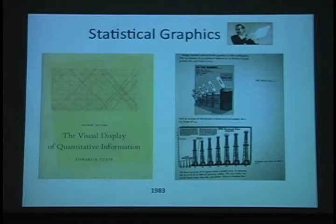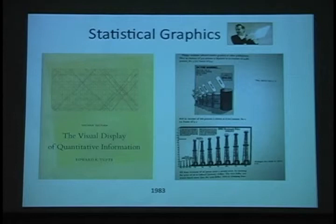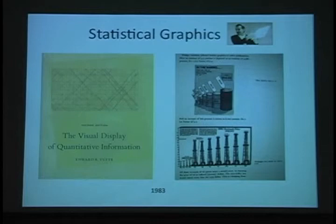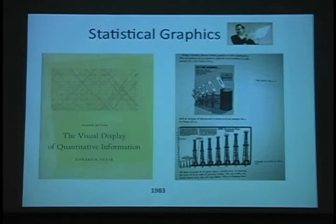As it happens, Tufte was just appointed on March 5th to Obama's recovery advisory panel — asked to be one of the advisors on the recovery money allocation and, most importantly, the presentation of those results to the general public. Now, I'm going to show you some bad graphs just because they're so much fun. I had the pleasure today of meeting Milo Shield, who found this graph and sent it to a publication where I found it and kept it ever since. This is a pie chart — but every wedge of this pie chart has more than 60%. Something's wrong.